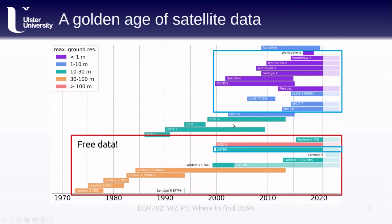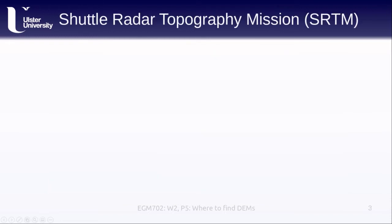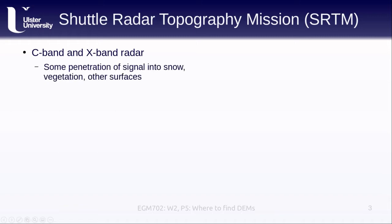Not only do we have that, but we also have a number of different global DEM products that we'll talk about in this lesson. The first of these is the Shuttle Radar Topography Mission, or SRTM. This was acquired using a C-band and an X-band radar, which means there is some penetration of the signal into snow, vegetation, and other surfaces that you need to take into account when using the SRTM data. But this is a very good global product you can use for lots of different applications.